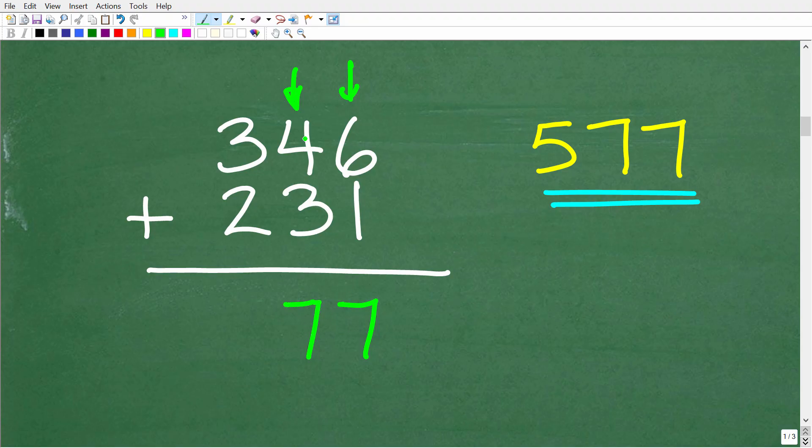So in other words, we're putting the answer right underneath these columns. And then we're going to go to our last column, which is this one. So we have 3 plus 2 is 5. So our final answer here is 577, which, of course, is the sum of these two three-digit numbers.